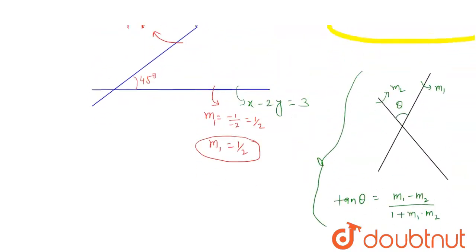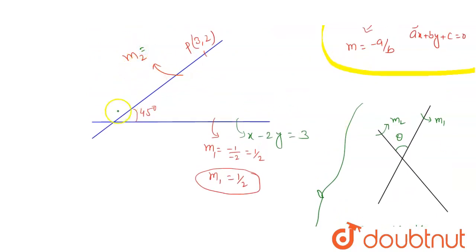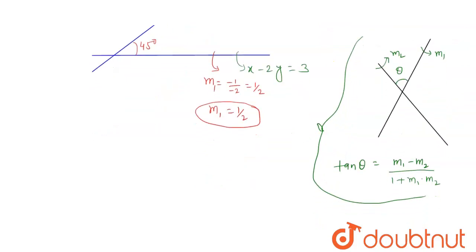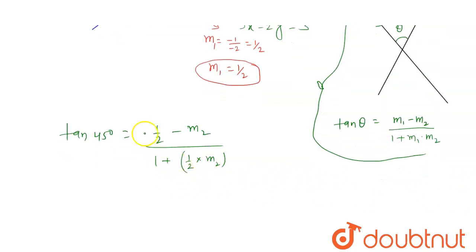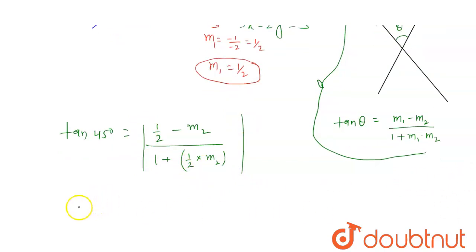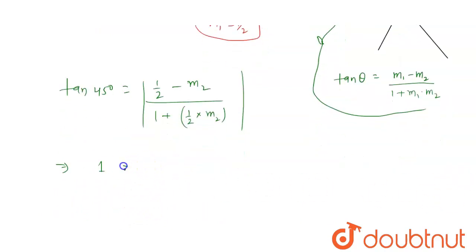Since the angle is 45 degrees, tan(45°) equals m1 minus m2 upon 1 plus m1 times m2. Substituting m1 equals one-half, this gives: 1 equals, in modulus, one-half minus m2 upon 1 plus one-half times m2, which simplifies to 1 minus 2m2 upon 2 plus m2.